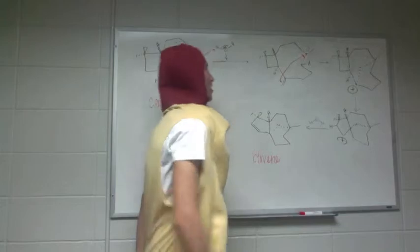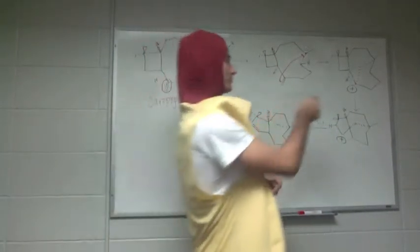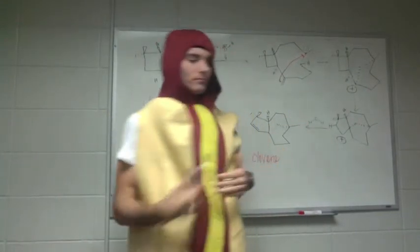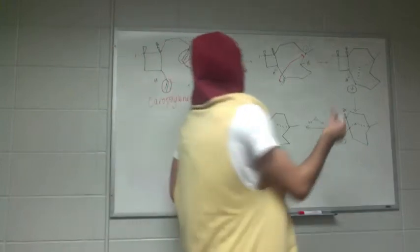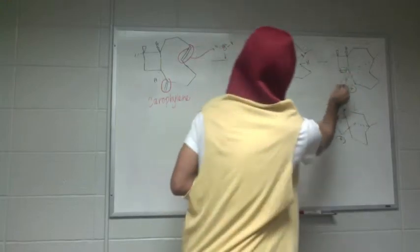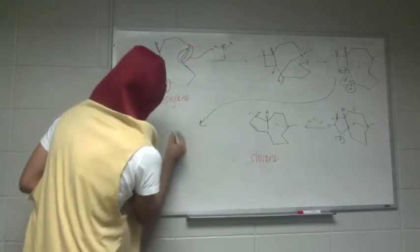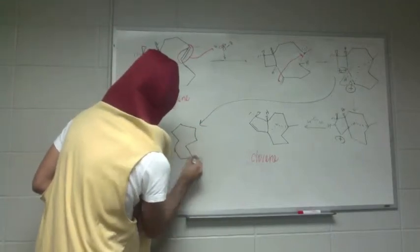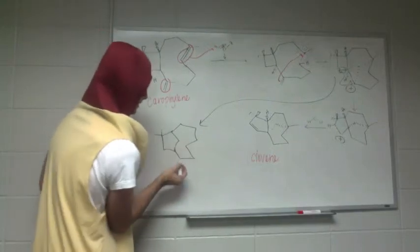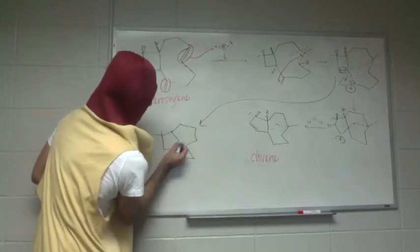So now we have a carbocation on a tertiary carbon which is near a strained ring. So what's going to happen is a ring expansion, which at first we thought was going to be this carbon bond that was going to expand like that.